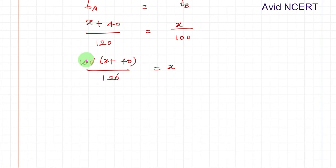So simplifying this by cross multiplication, 100 into x plus 40 divided by 120 equals x. Zero, zero gets cancelled. 2 times 5 is 10, 2 times 6 is 12. So again, cross multiplication.